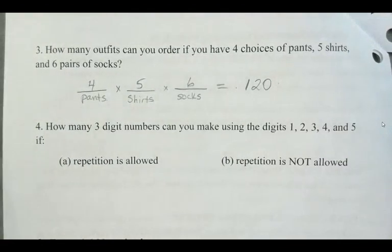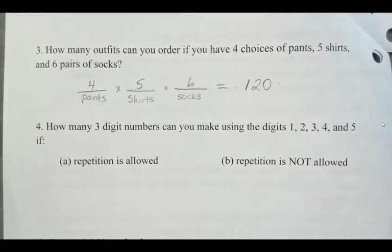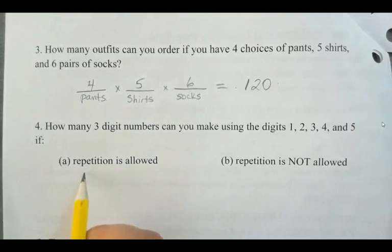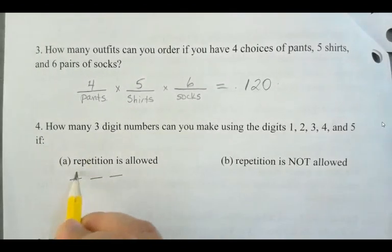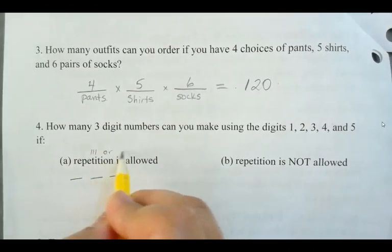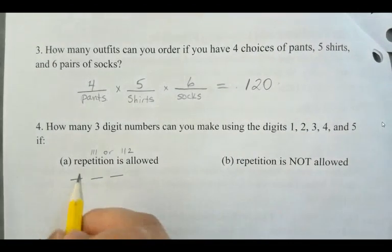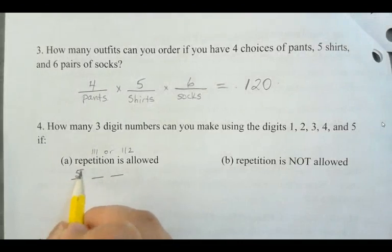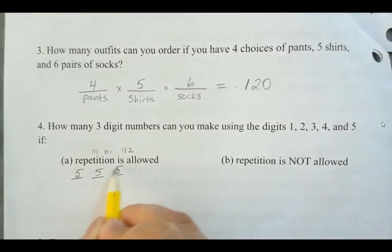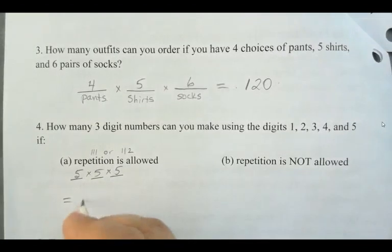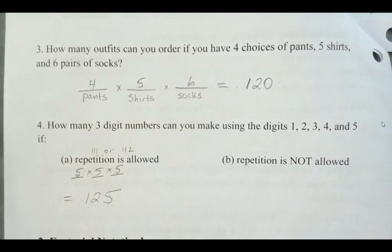And then finally for this fundamental counting principle — how many three-digit numbers can you make using the digits 1, 2, 3, 4, and 5 if repetition is allowed? When repetition is allowed, I could have a number like 1-1-1 or 1-1-2. So I have five choices for the first digit, five for the second, and five for the third. Multiplying those together gives 125 different arrangements.